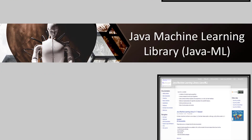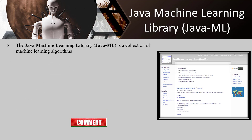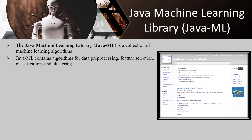The Java Machine Learning Library, Java-ML, is a collection of machine learning algorithms with a common interface for algorithms of the same type. It only features the Java API and is primarily aimed at software engineers and programmers. Java-ML contains algorithms for data pre-processing, feature selection, classification, and clustering. In addition, it features several WEKA bridges to access WEKA's algorithms directly through the Java-ML API.